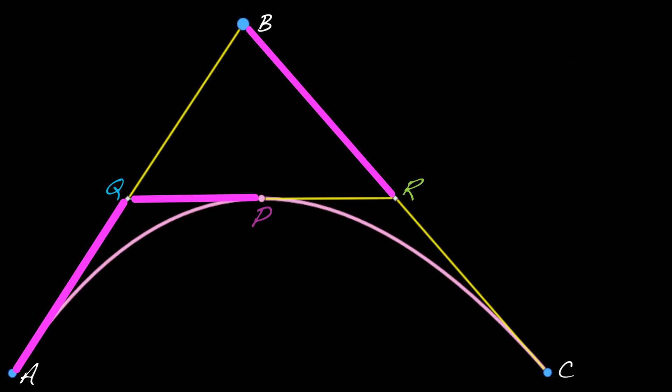So the geometry says that if this is a fraction t along the way, that this is in ratio t to 1 minus t. This is in ratio t to 1 minus t. And this is in ratio t to 1 minus t.